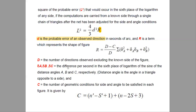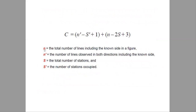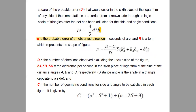What is C? C is basically the geometric conditions of sides and angles. C is calculated using N, N-dash, S, and S-dash. N is the total number of lines including the known side of the figure. N-dash is the number of observed lines in both directions. S is the total number of stations, and S-dash is the number of stations occupied. Now we are familiar with each term and we have the relation for how to calculate the strength of figures.